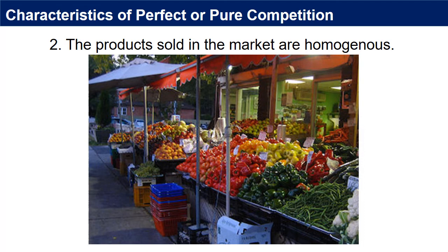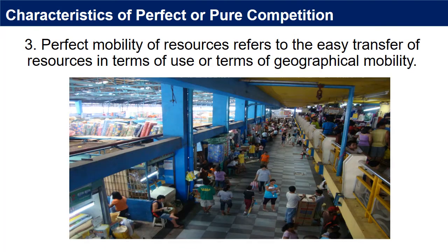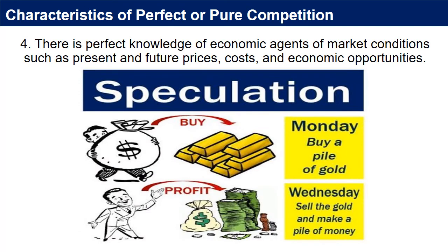Most of the products sold in perfect competition are agricultural products. 3. Perfect mobility of resources refers to the easy transfer of resources in terms of use or geographical mobility. 4. There is perfect knowledge of economic agents of market conditions such as present and future prices, costs, and economic opportunities.